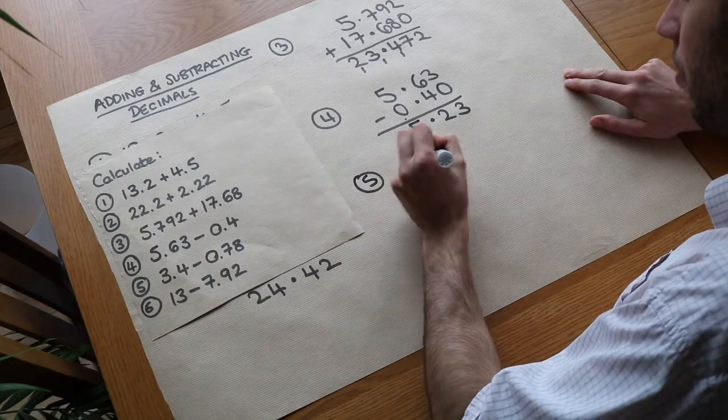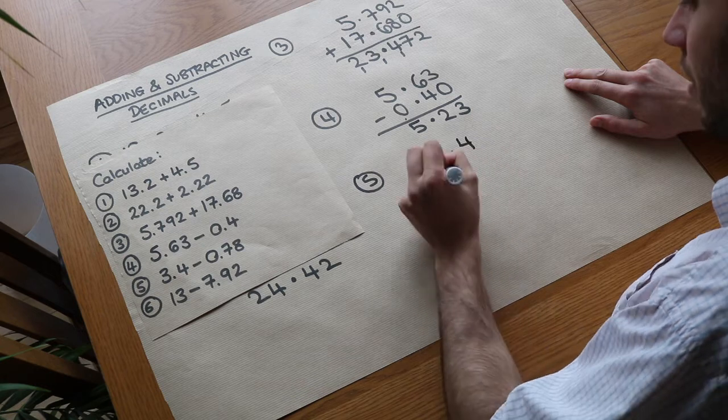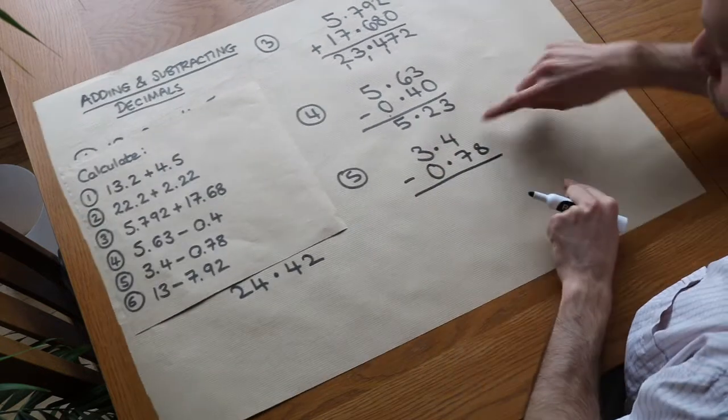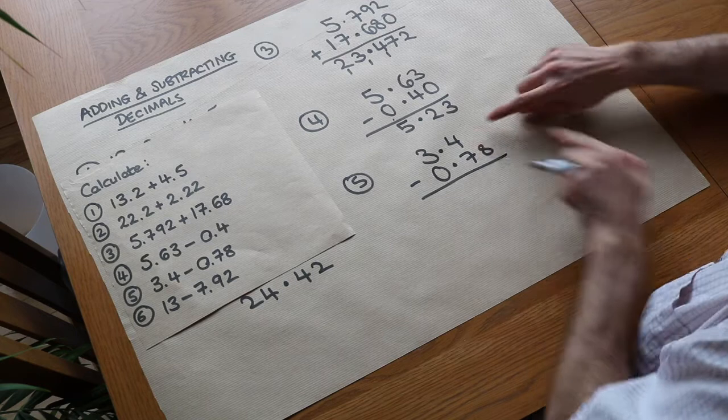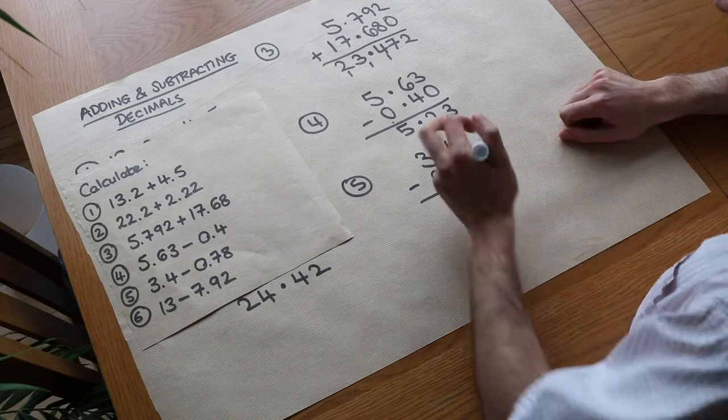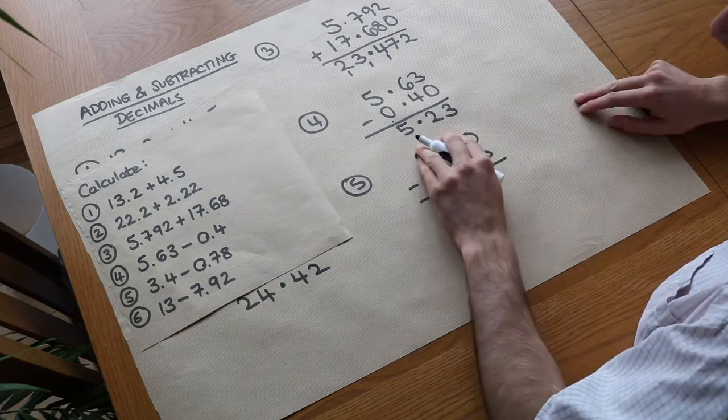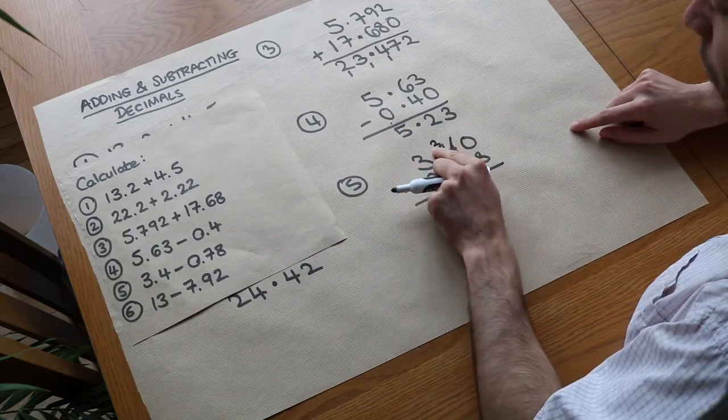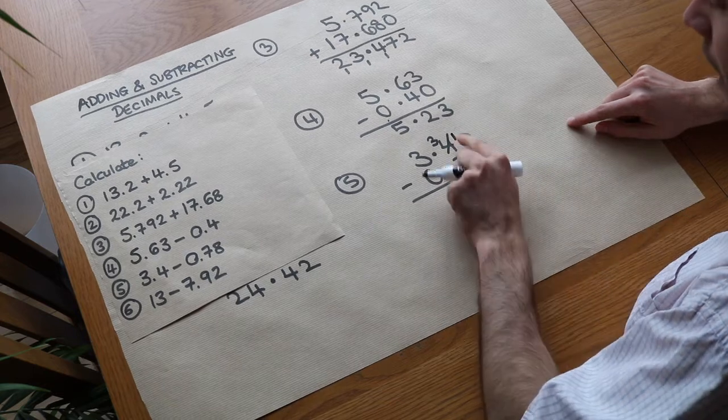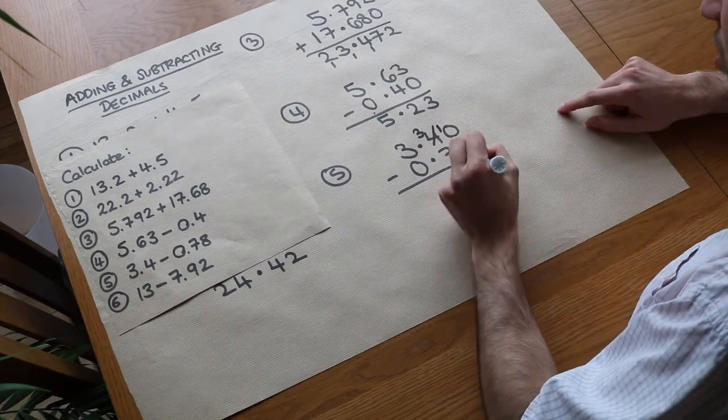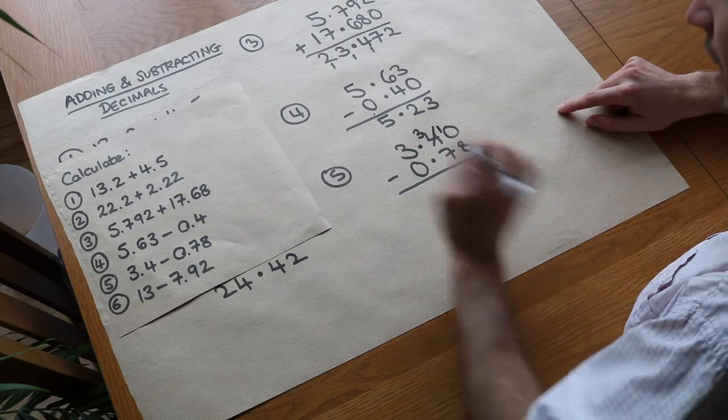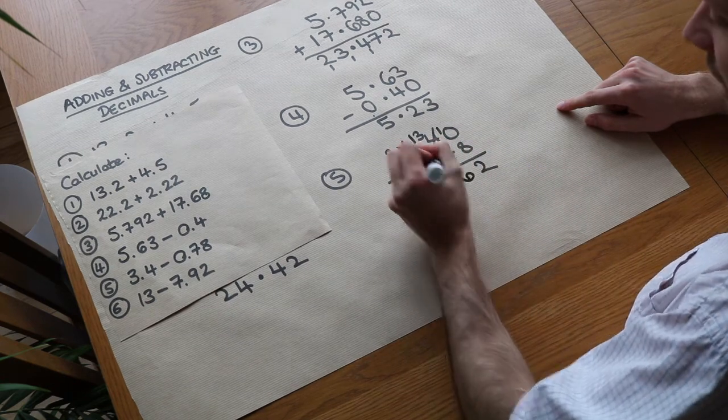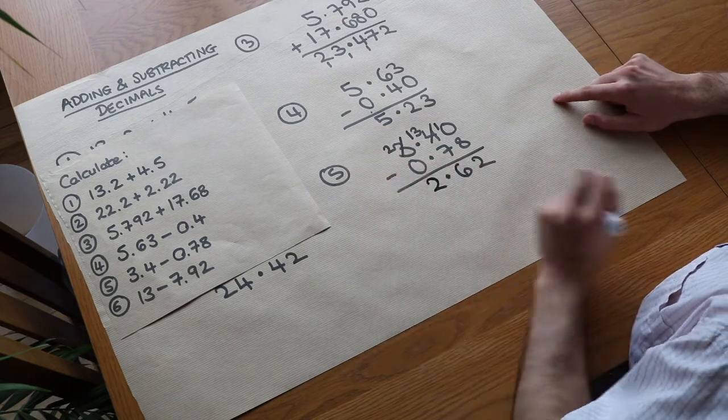What about question 5? 3.4 minus—the decimal points in the same place—0.78. Now it's absolutely crucial you put a 0 there, because if you didn't, you might be tempted to just put 8 there, but if you put a 0 there, we realize we're doing 0 minus 8 and we're going to have to borrow. We can't do 0 minus 8, so we borrow from this 4. It reduces by 1, which means we can put a 1 here, and we now have 10 minus 8, which is 2. We can't do 3 minus 7, so again we borrow. That reduces by 1, which means we can put a 1 here, and then we do 13 minus 7, which is 6. The decimal point goes in the same place, and then 2 minus 0 equals 2.